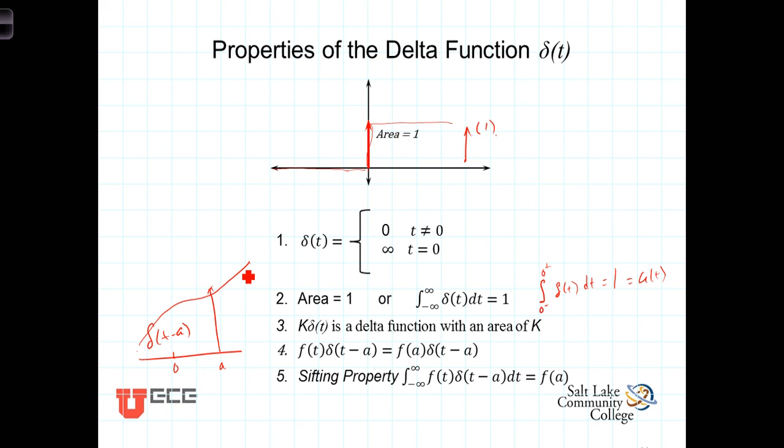So, here we've got this continuous function, f of t. We multiply it by a delta function located at t equals a. There is only one value of the function that's involved. Everywhere else, this is zero, so the product has only one point. The value of the function at that point is f of a times delta of t minus a.